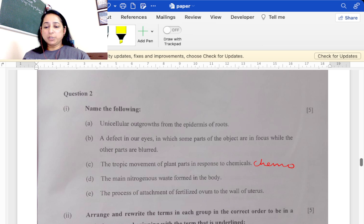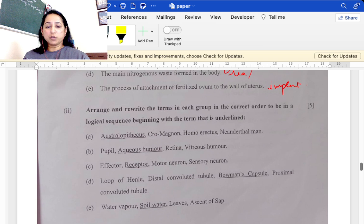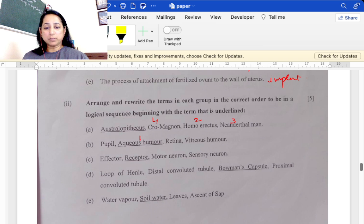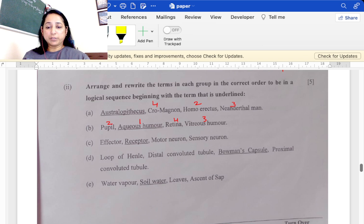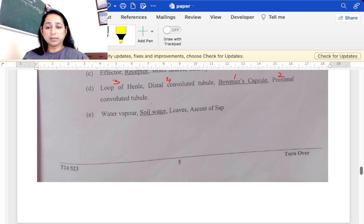Main nitrogenous waste in the body formed is urea or ammonia. Process of attachment of fertilized ovum is implantation. Arrange the following and write: Australopithecus, then Homo erectus second, then Neanderthal man third, then Cro-Magnon. Iris pupil aqueous: first is aqueous humor, then pupil, then vitreous, and then retina. Receptor passes information from sensory neuron to motor neuron, then effector. Bowman's capsule first, then proximal convoluted, then loop of Henle, then distal convoluted tubule. Water vapor soil leaves: soil water first, ascent of sap second, through leaves three, then water vapor goes out through transpiration.